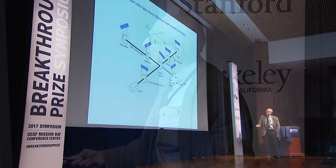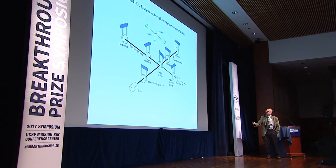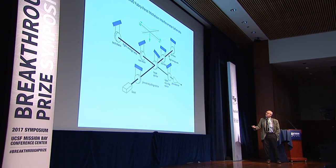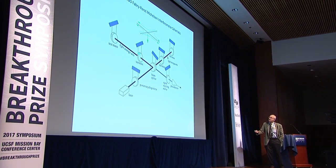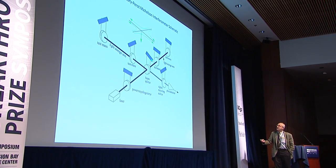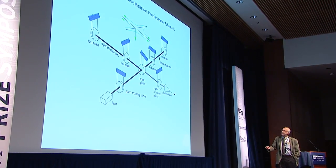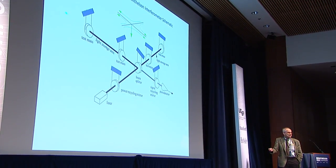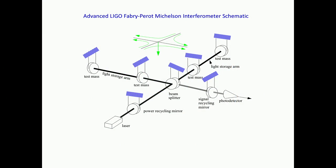One of the people not with us today, who is sick but also received the Breakthrough Award, is Ronald Drever — he invented many of these ideas. Here is the actual device that made the detection. It's much more complicated looking. Here's the laser, the beam splitter, and those two distant mirrors, but some things have been added: two mirrors that take the light and bounce it back and forth many times, giving many shots at measuring — a factor of about 100 to maybe 300.